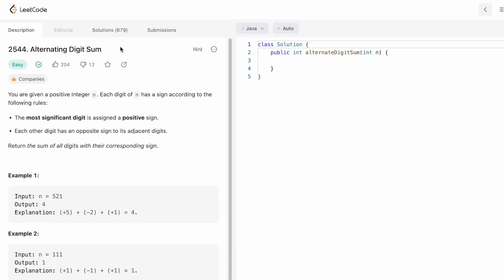Hey guys, welcome to a new video. Today we're going to look at a LeetCode problem called Alternating Digit Sum. In this question, we're given a positive integer n. Each digit of n has a sign according to the following rules: the most significant digit is assigned a positive sign, and each other digit has an opposite sign to its adjacent digits.